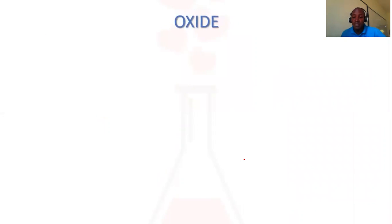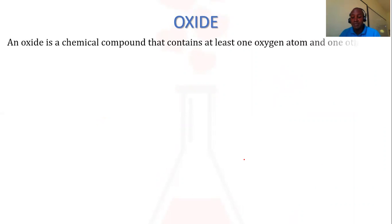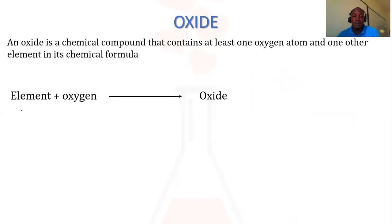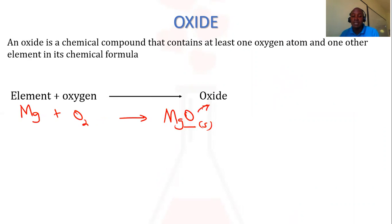But before we do so, what exactly is an oxide? When you get an element and react it with oxygen, an oxide is always formed. For example, if you have an element of magnesium and react it with oxygen to form magnesium oxide, magnesium oxide will be our oxide. So magnesium oxide in this case will be the oxide. It will be a compound that contains two elements in which oxygen is one of them — so here we have magnesium and then oxygen.